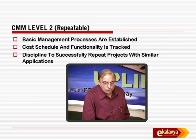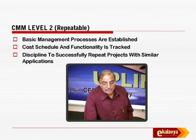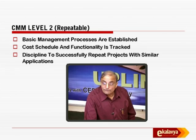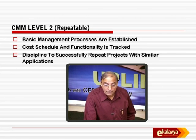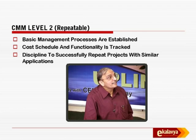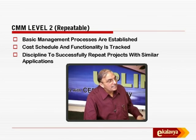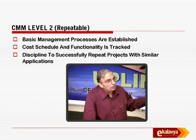Level 2 is called a repeatable level because the basic management processes are established. Cost, schedule, and functionality are tracked. Discipline to successfully repeat projects with similar applications exists. If a similar application is given, you can say that last time it took 28 person-months — a similar assignment I can do in 24 or 28 person-months. That means I can repeat that process.